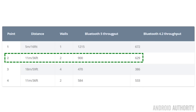Once I moved the board to its second point — 11 meters away, that's 36 feet, through two walls — Bluetooth 5 dropped down to 900 kilobits per second. That's quite a significant drop from 1.2 megabits per second. Meanwhile, Bluetooth 4.2 dropped from 672 kilobits per second to 629 kilobits per second, so the drop from Bluetooth 4 was much less than the drop experienced in Bluetooth 5.